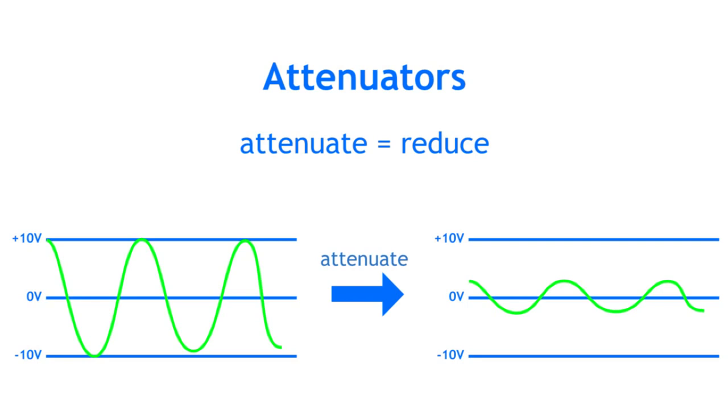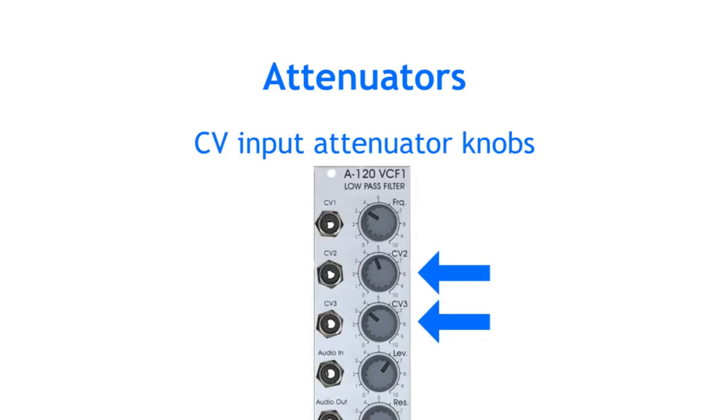Many modules that receive control voltages have input attenuator knobs, often labeled simply CV, which let you set the amount of modulation.